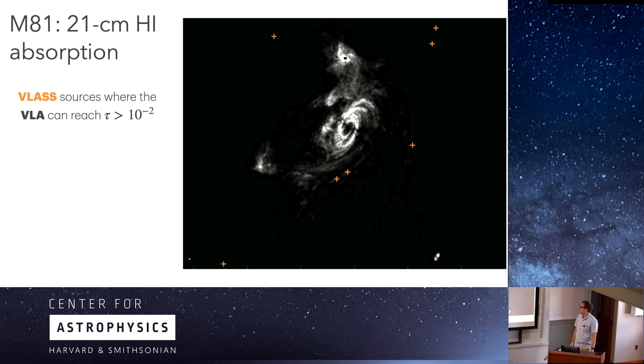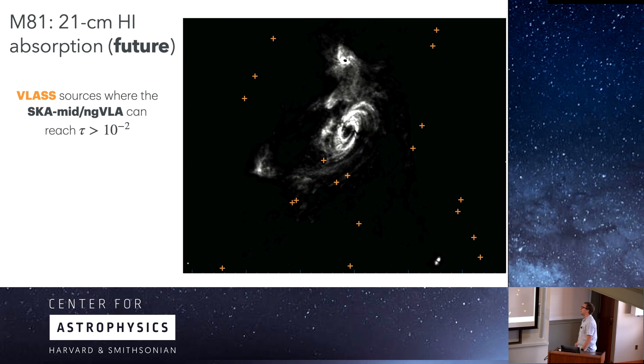This is the same image we were looking at before. These are the sources of background radio sources that are bright enough that we could get a pretty good constraint on the CNM fraction from H1 absorption. It's pretty sparse. Looking ahead to the future, this is the type of density we'd expect from something like the SKA-MID or NGVLA to be able to provide. This would be something like 10 hours on source, so reasonable for what you'd be able to get with a typical length observation.